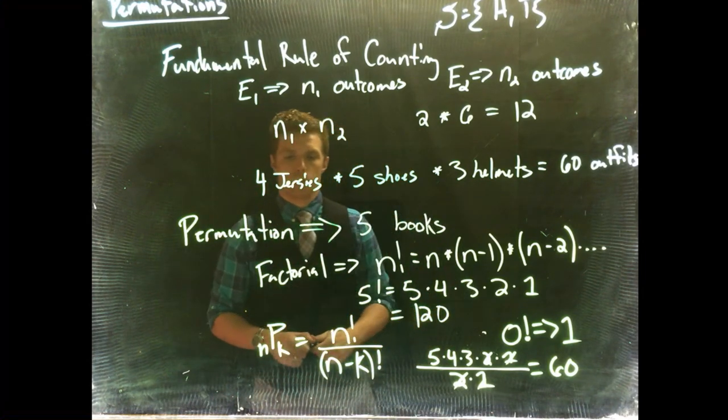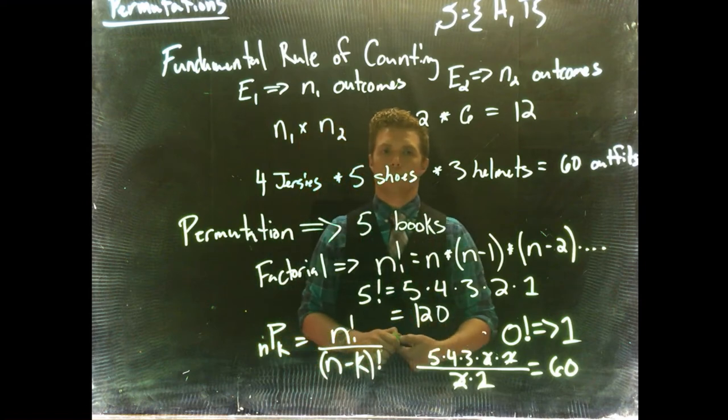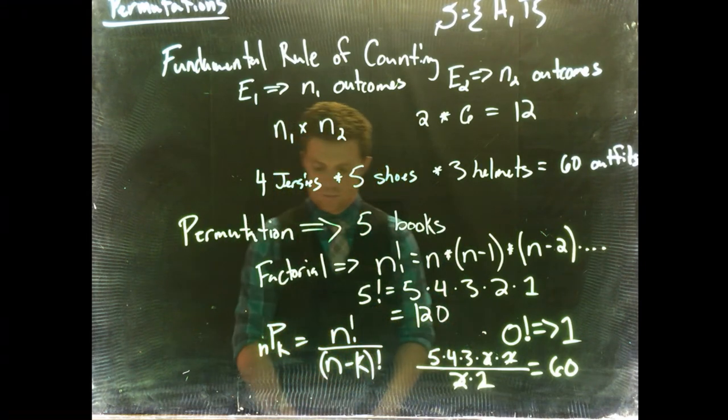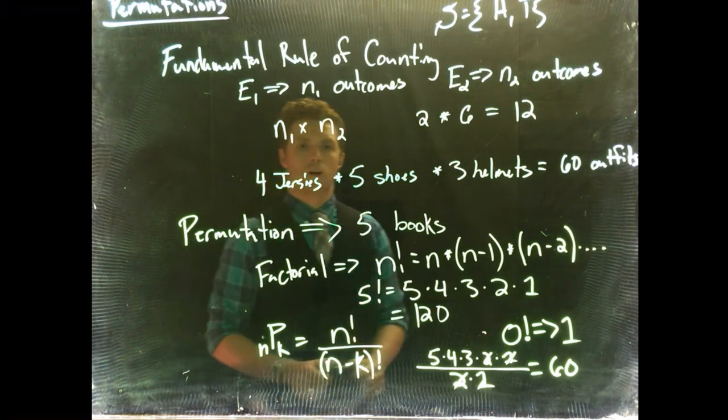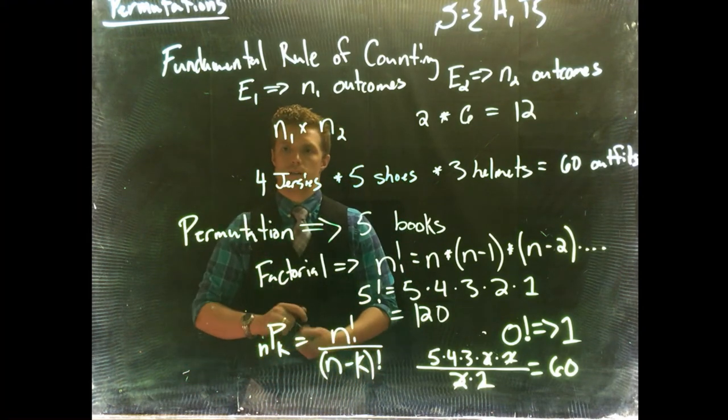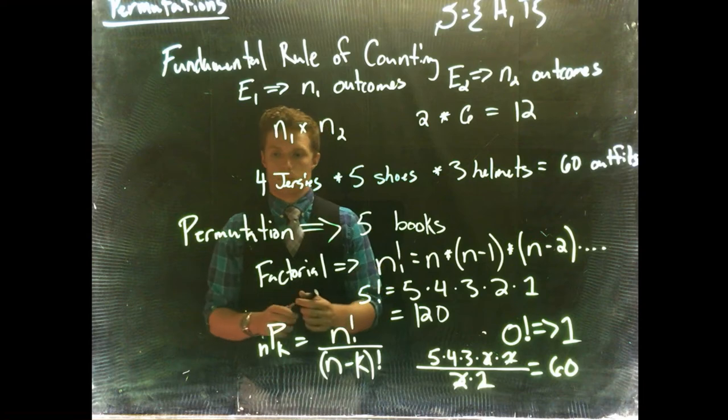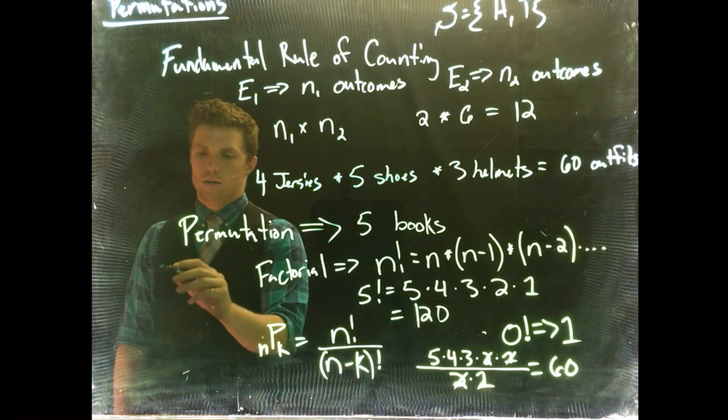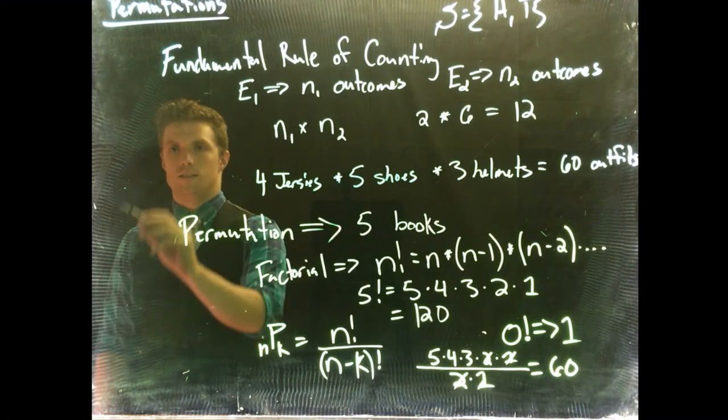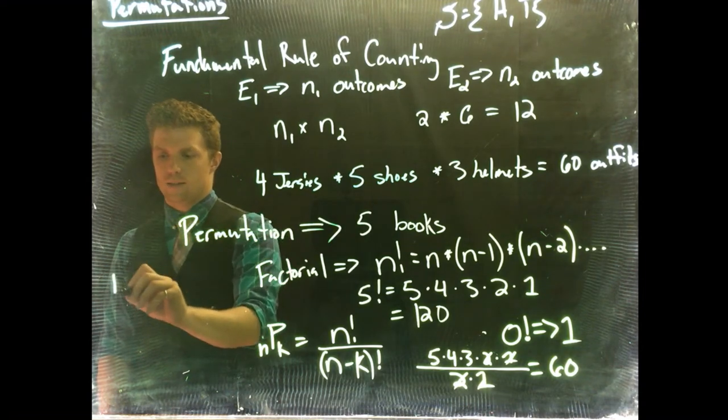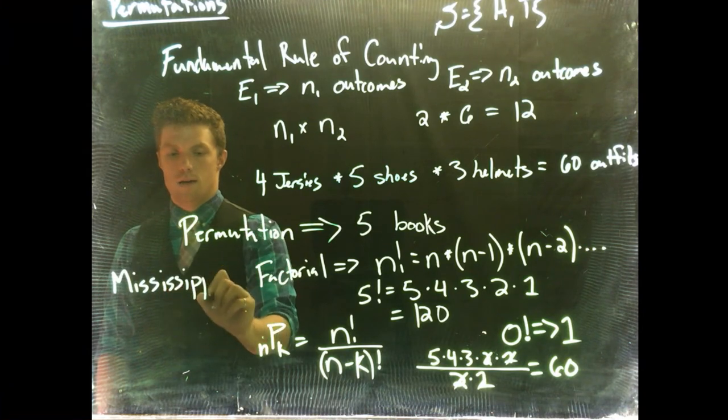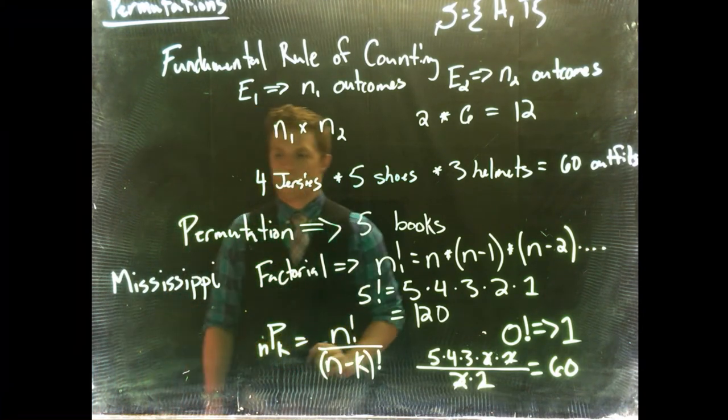Okay. The last one that we want to talk about is, are there distinguishable outcomes? Because sometimes our outcomes are indistinguishable from one another. So let me do an example. Let's do a simple word, we can do Mississippi. This is a dumb example, but we'll do it. M-I-S-S-I-S-S-I-P-P-I.